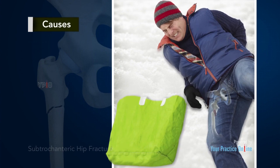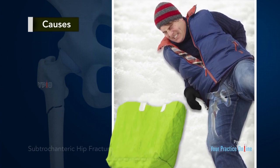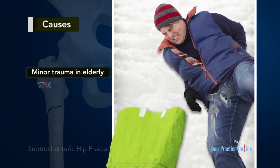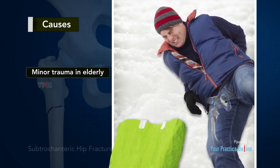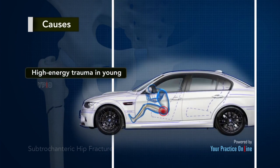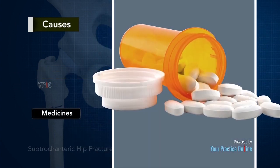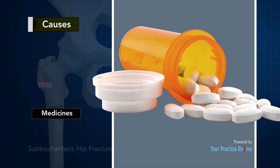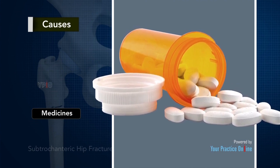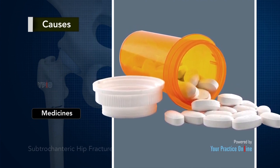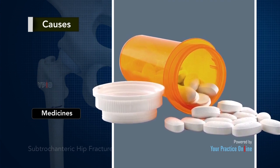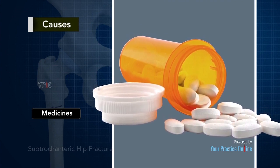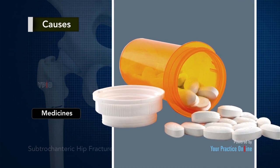A subtrochanteric hip fracture is most frequently caused by minor trauma in elderly patients with weak bones and by high energy trauma in young people. Long-term use of certain medicines such as bisphosphonates to treat osteoporosis, a disease causing weak bones, and other bone diseases increase the risk of subtrochanteric hip fractures.